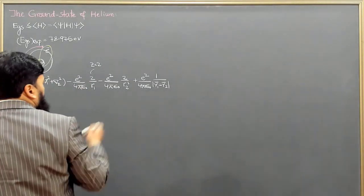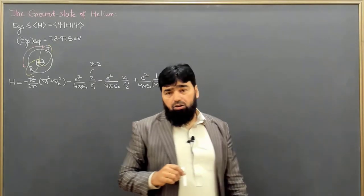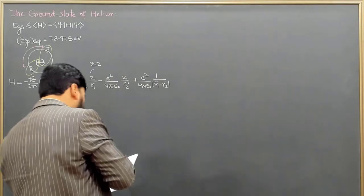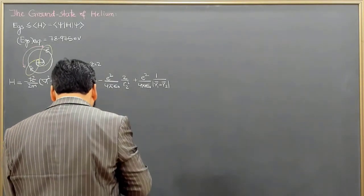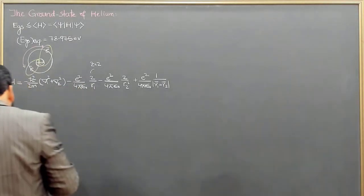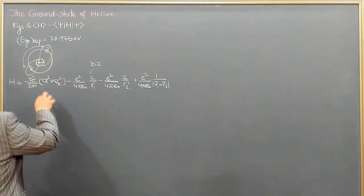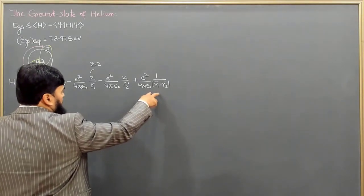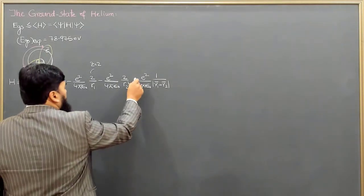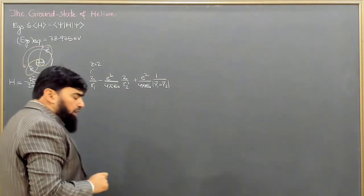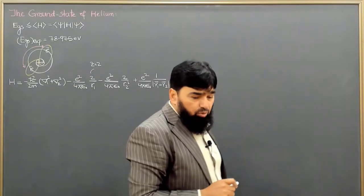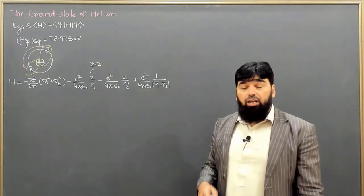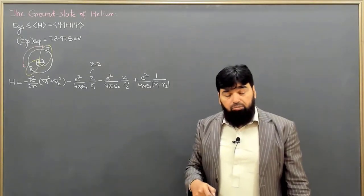There is also a repulsive term because the two electrons repel each other. That repulsive term is positive: plus e squared over 4π ε₀ times 1 over |r₁ minus r₂|. When I draw a diagram I will explain why we write r₁ minus r₂. We are ignoring internal nuclear features and other electron properties not taken into account.